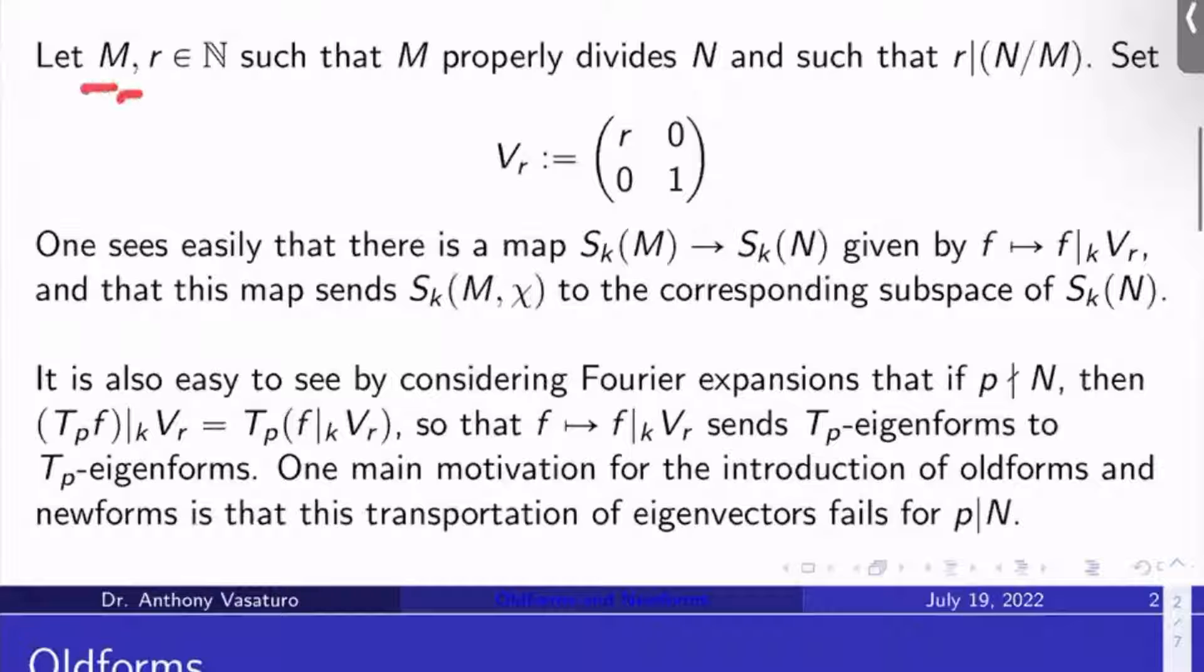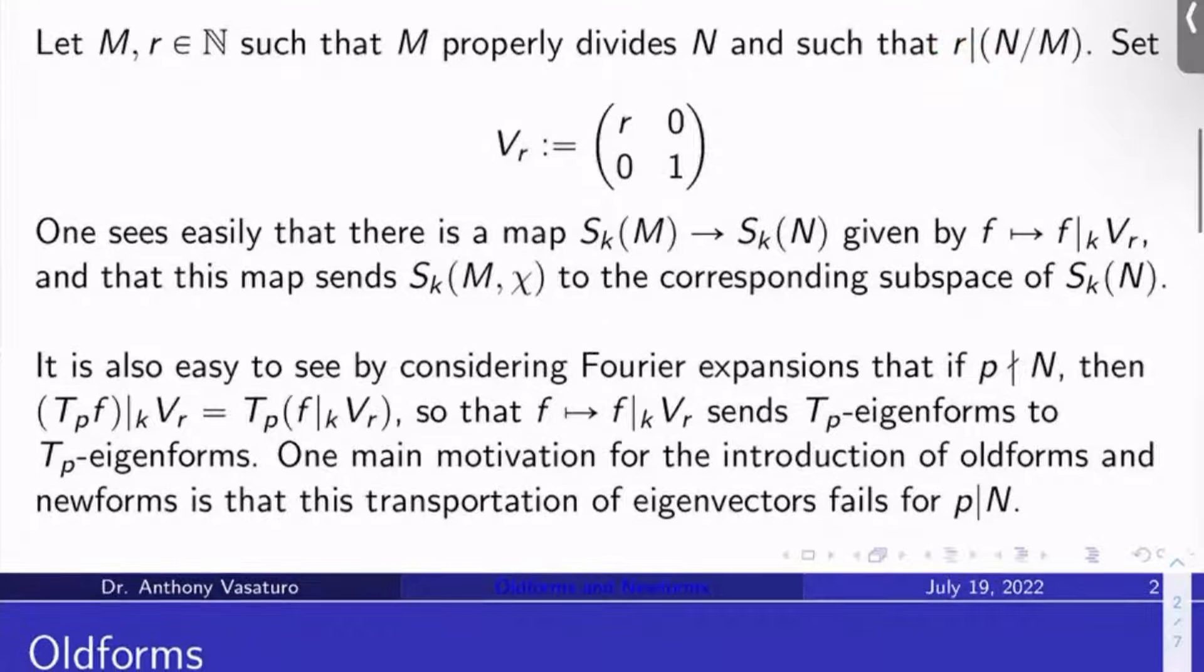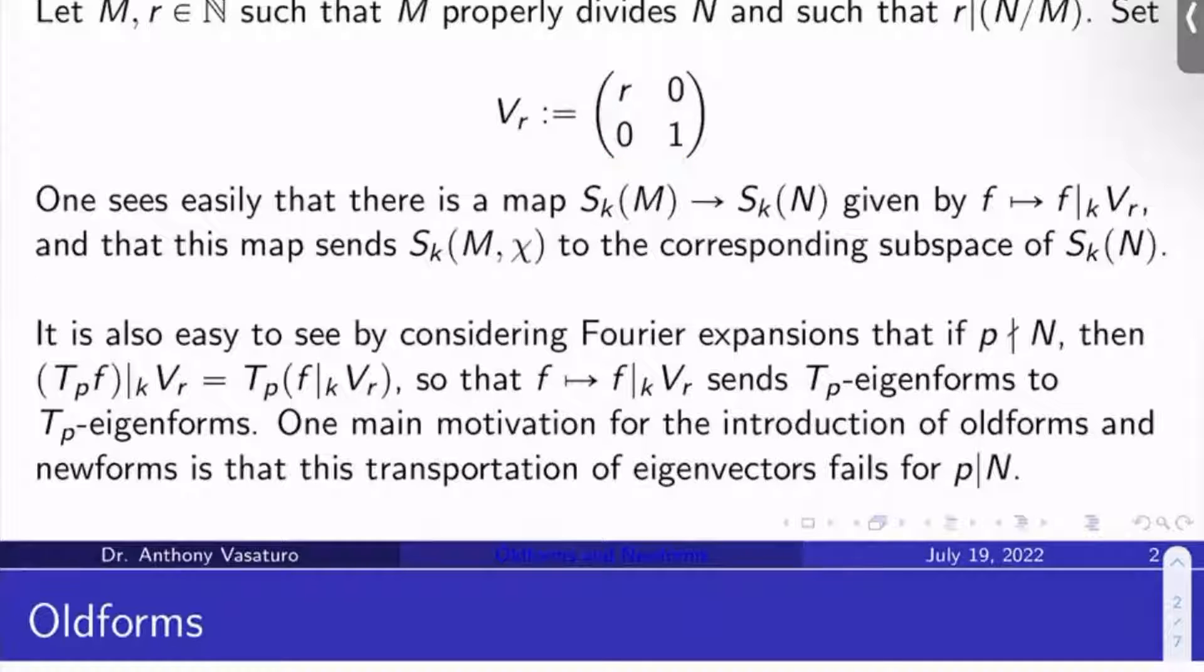Let M and r be natural numbers such that M properly divides N. That means M just isn't N, but it divides it. And we also want to make sure r divides the quotient N over M. Let V_r be the scaling by r matrix, so r, 0, 0, 1. You can easily check there's a map from S_K(M) to S_K(N) given by sending f to f bar K V_r, and that this map sends S_K(M, chi) to the corresponding subspace of S_K(N).